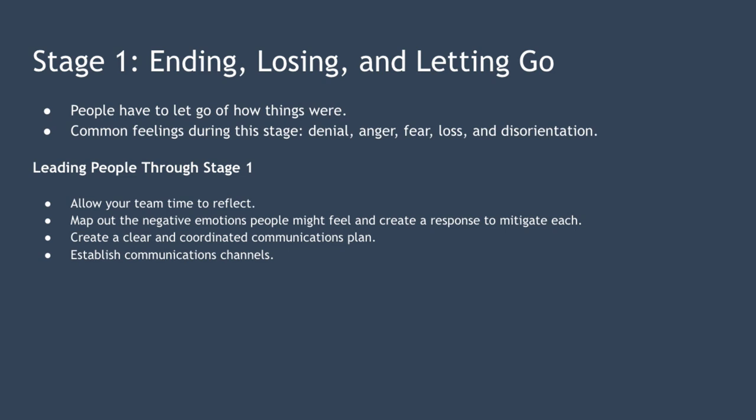Try to get everyone talking about how they feel. Map out the different negative emotions people might feel and create a response to each. Create a clear and coordinated communications plan explaining why the change has to happen and what the future will look like. Establish communication channels for people to discuss how they feel, and highlight where possible any positive benefits to the individual once the change has been completed.